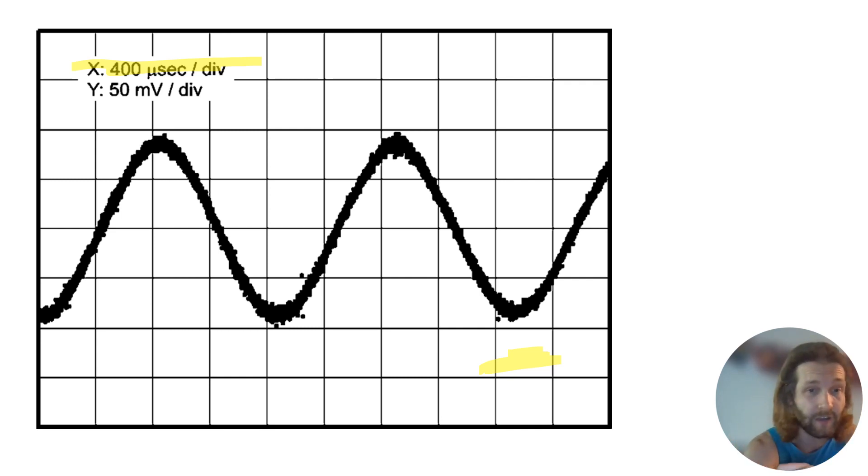So we can look at an entire waveform here which goes across one, two, three, four. So I've got 1600 microseconds for my time period. And then, of course, knowing that time period is one over frequency, I can invert that number and have the frequency of the wave.